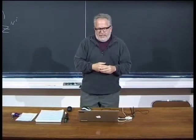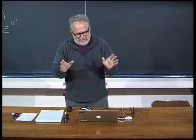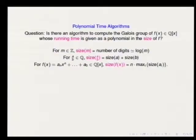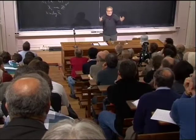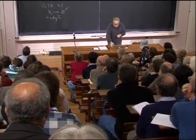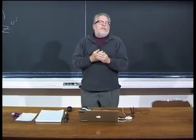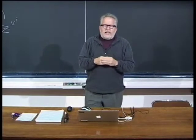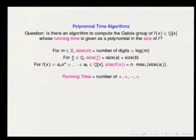By 'size,' the way we measure the size of an integer is the length — the amount of space it takes to write it down, the number of digits, which is about log of the real size of the integer. For a rational number, its size is the size of the numerator plus the size of the denominator. For a polynomial, its size is n times the maximum size of the coefficients. Running time is the number of operations on digits.